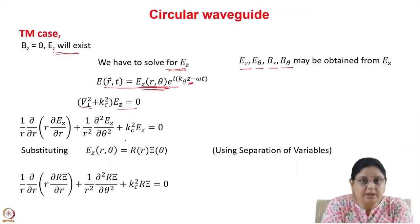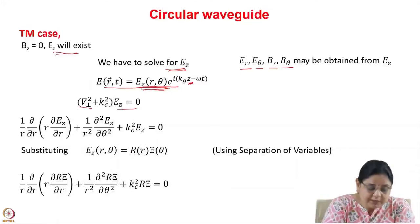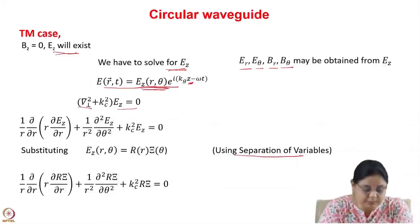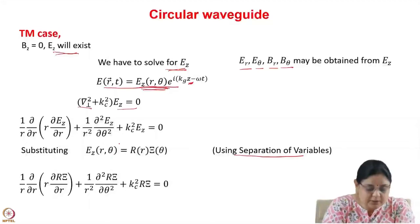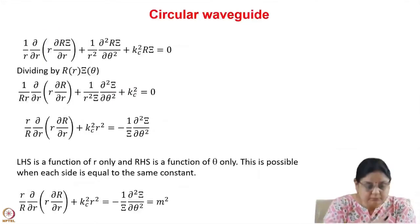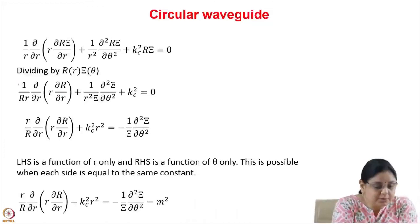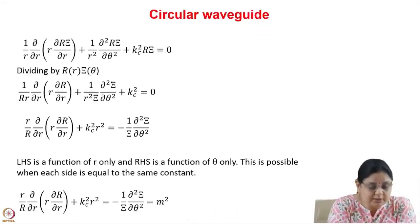As we did for the rectangular waveguide, we write Ez(r, theta) as R(r) times capital Theta(theta) and solve by separation of variables. Substituting into the wave equation and dividing by R and Theta, we get an equation where the left-hand side is a function of r only and the right-hand side is a function of theta only.